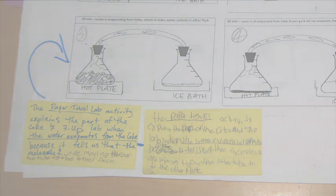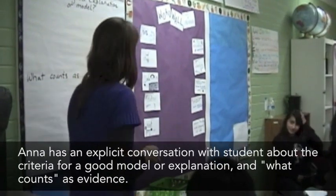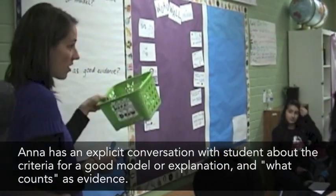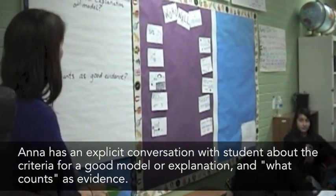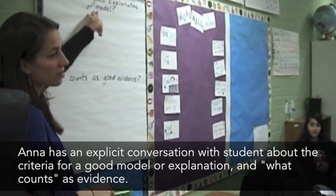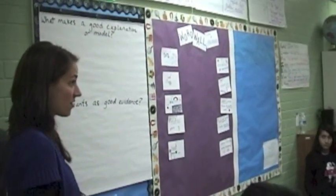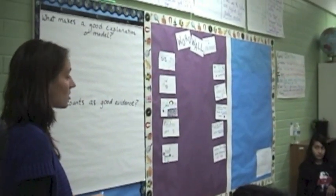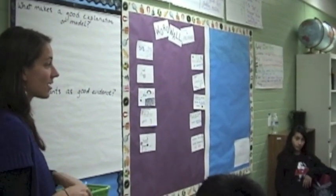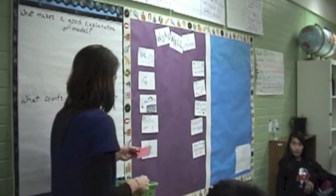The student's work told her that they needed to have a whole class conversation about evidence and the kinds of explanations she would expect from them. All right, so all we're going to do is, I'm just going to draw names. I just want you to tell me one thing you've heard, either from your partner, that you wrote down, that you heard someone else say. Because this was only the second unit of the year, Anna's students had time to grow in their understanding of explanation and modeling.